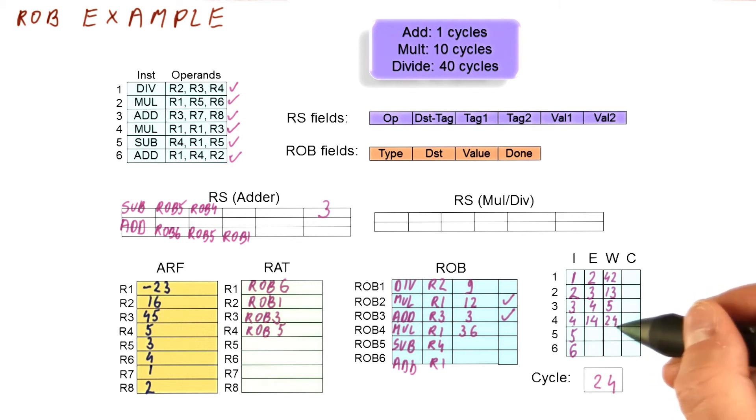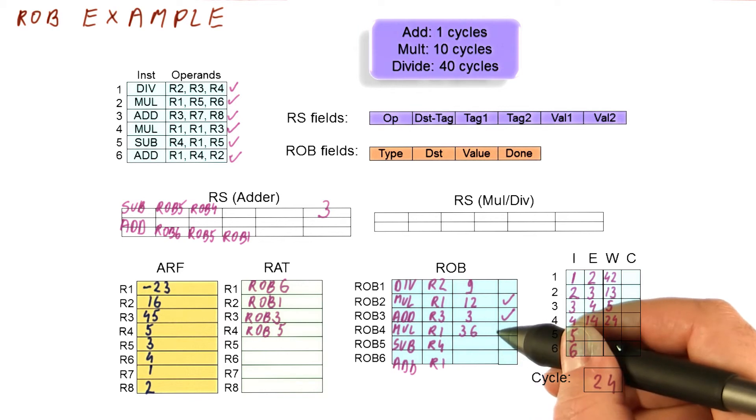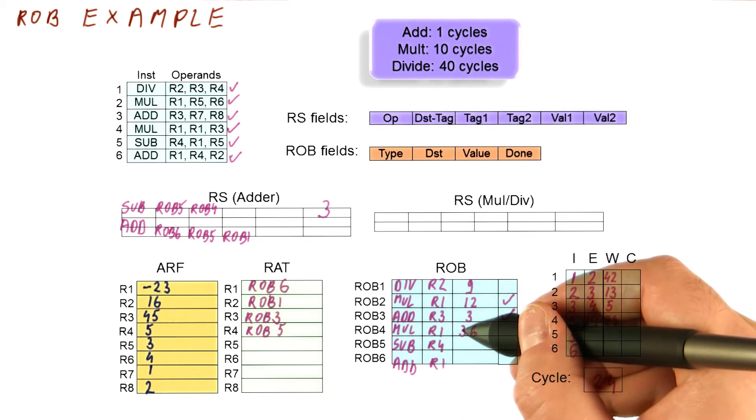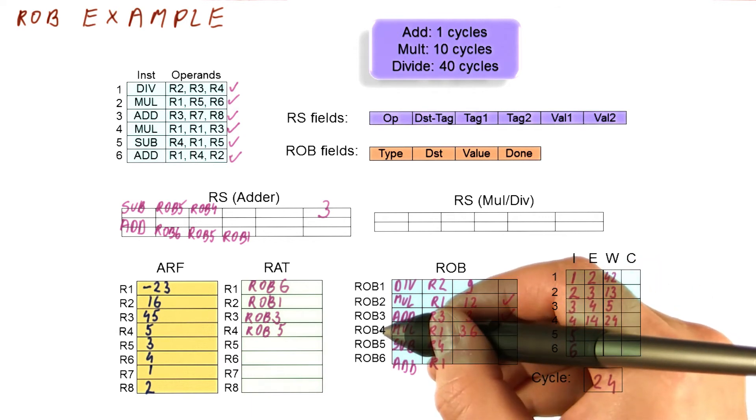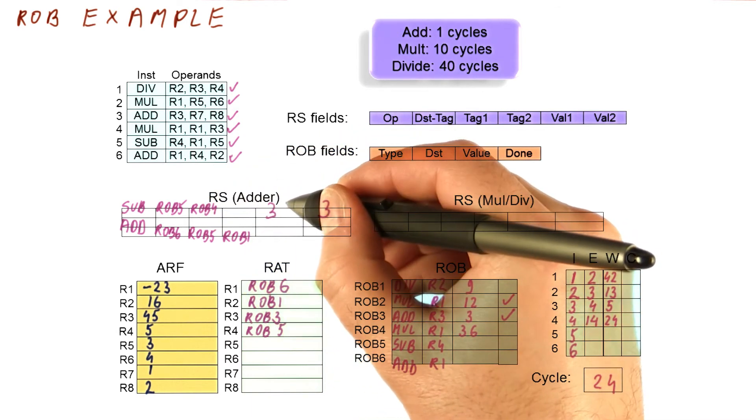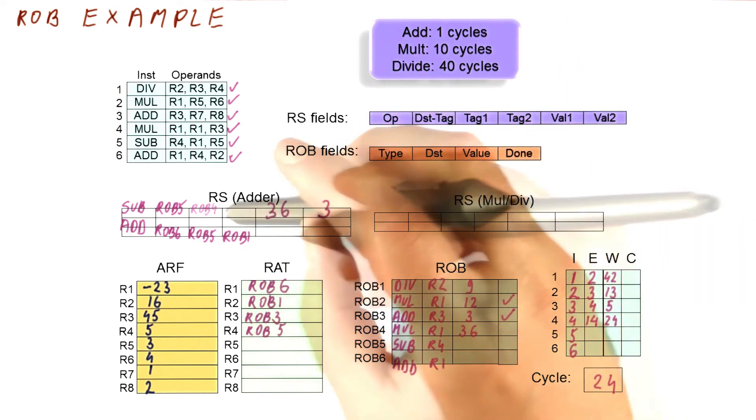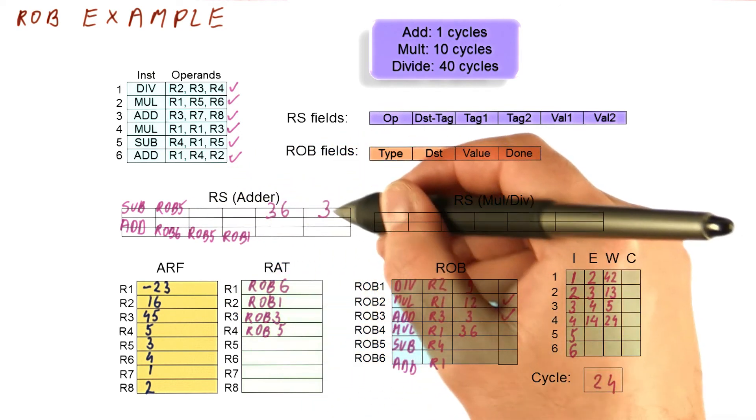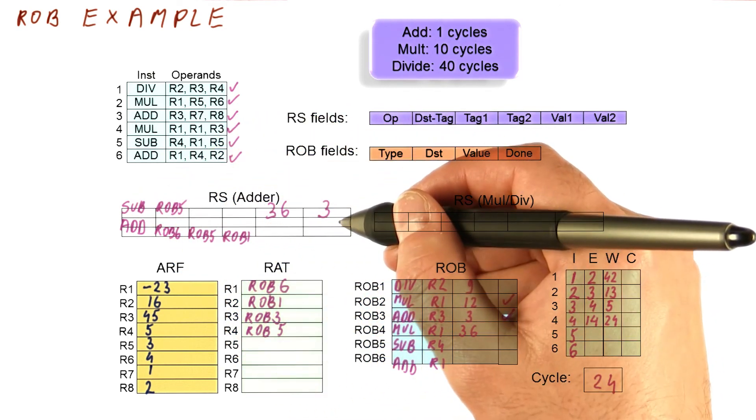In cycle 24, the fourth instruction will broadcast the result. This is the multiplication here. So what's going to happen is the value of 36 is going to be broadcast under the name of rob4. This instruction is waiting for rob4. So it's going to capture the value of 36 and mark that we are no longer waiting for this operand. This instruction actually now doesn't wait for anything anymore.